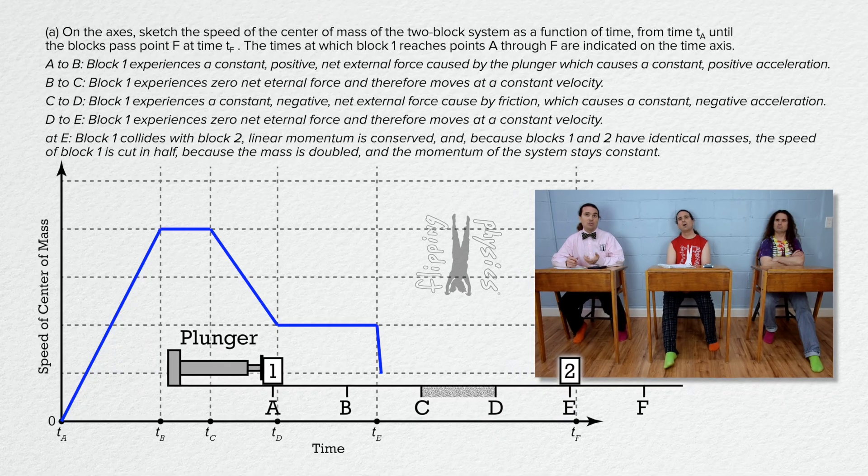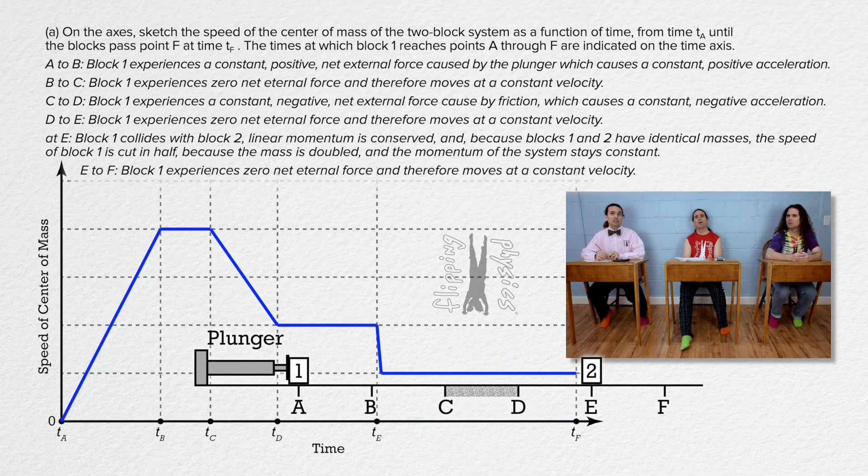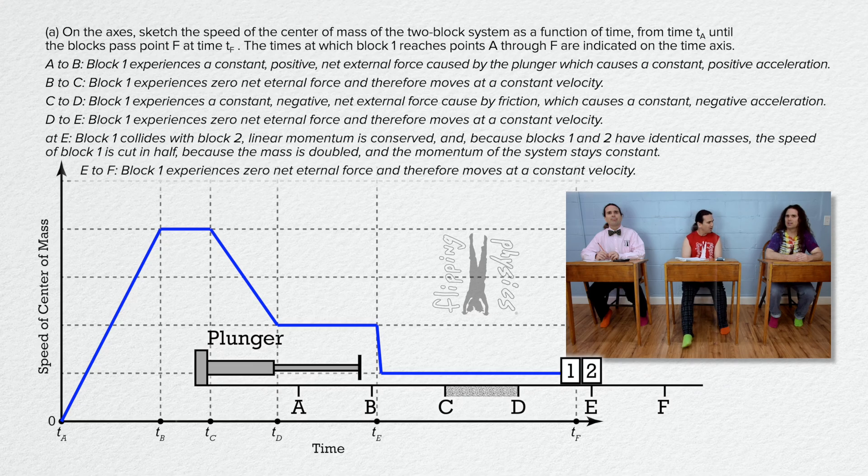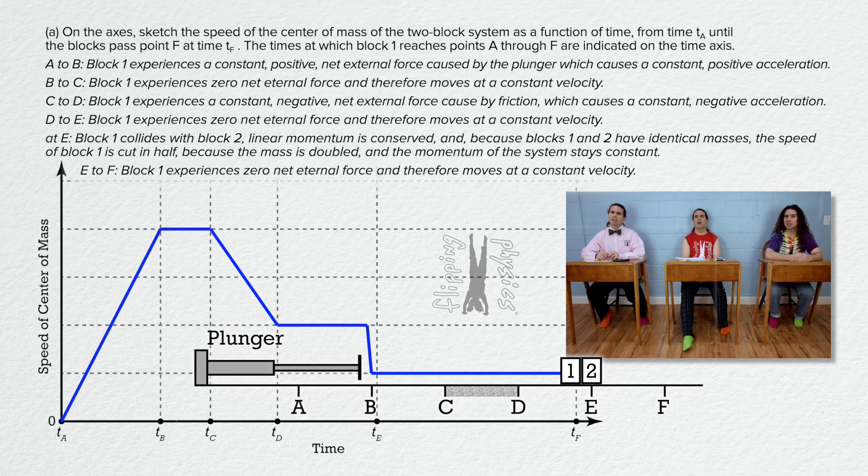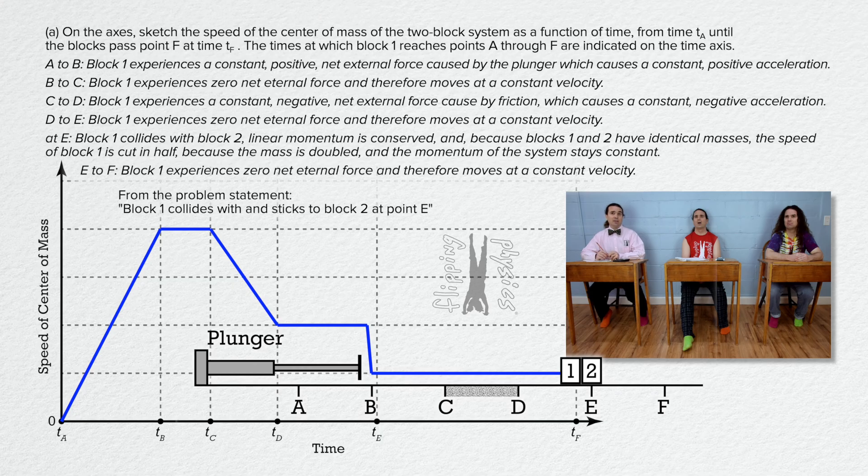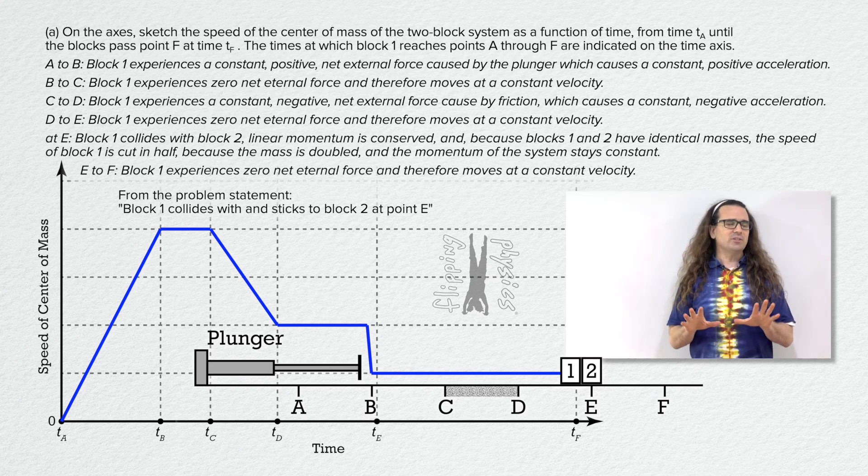But then from E to F, again, no friction, so it is a horizontal line until F. When you look at where block 1 is when it collides with block 2, the collision occurs before block 1 is at point E, so the drop in speed on the graph should actually occur before point E. I do not think we should draw it that way because it says in the problem that block 1 collides with and sticks to block 2 at point E. But that is not what the drawing shows.